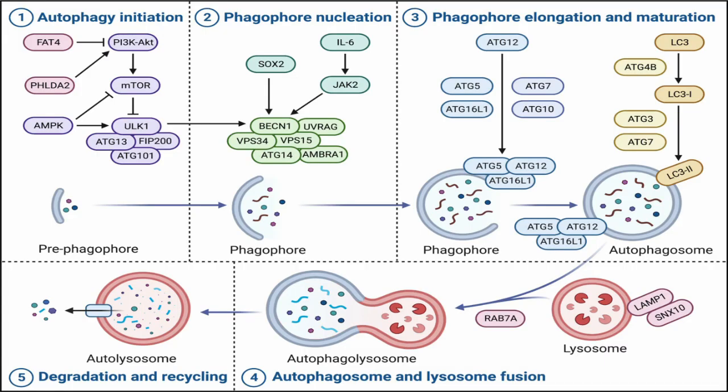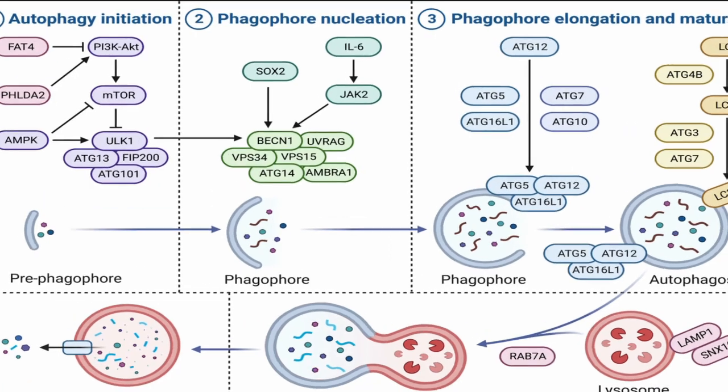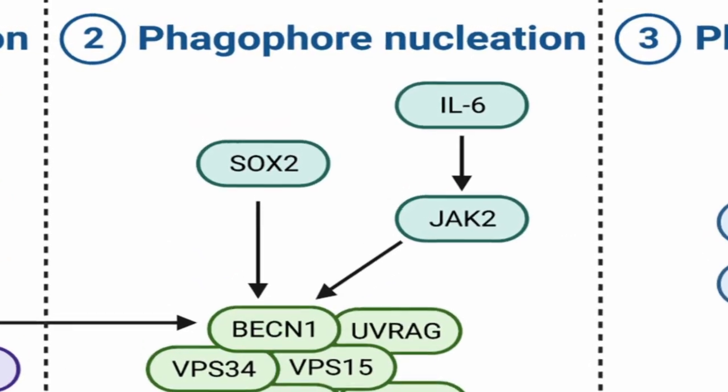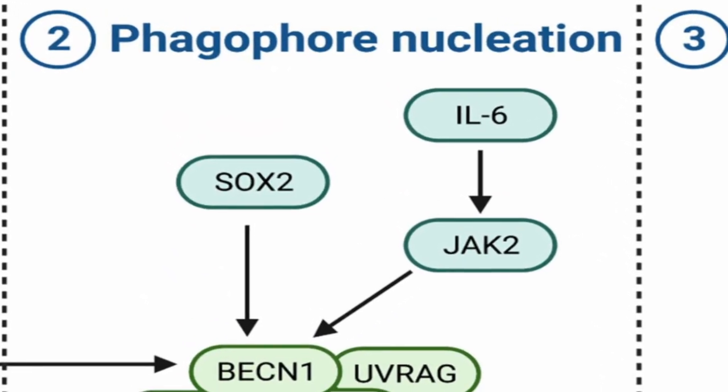A small membrane structure called the phagophore or isolation membrane begins to form. It is derived from membranes within the cell, typically the endoplasmic reticulum, but other sources can contribute to phagophore formation.